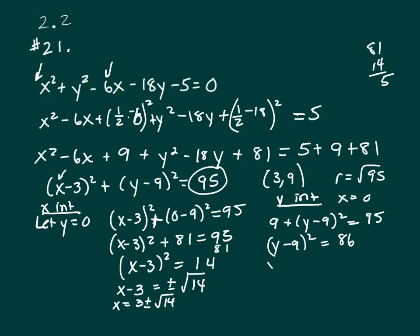So take the square root of both sides. Y minus 9 equals plus or minus square root of 86. So Y equals 9 plus or minus the square root of 86.